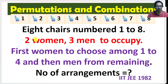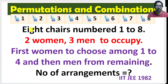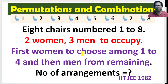First, women will choose. They can choose one of the chairs 1 to 4. Each woman — there are 2 women — will get a chance to pick one of these 2 chairs from these 4. Then, after the women are done, men can pick from the remaining 6. What is the total number of arrangements?